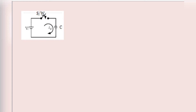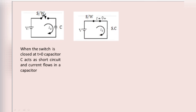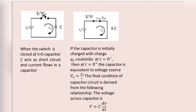For the capacitor circuit — a capacitor is connected in series with the DC voltage source through a switch. When the switch is closed, current ic flows through the circuit and the capacitor acts as a short circuit. If the capacitor is initially charged with Q₀ coulombs, the equivalent voltage across the capacitor is Q/C.